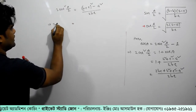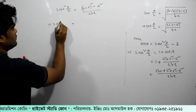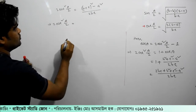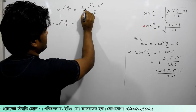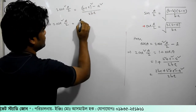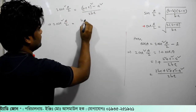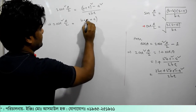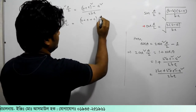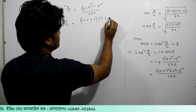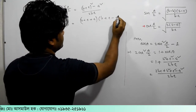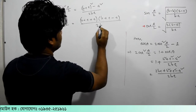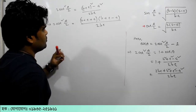We're going to write (b + c + a) times (b + c - a), divided by 2bc.